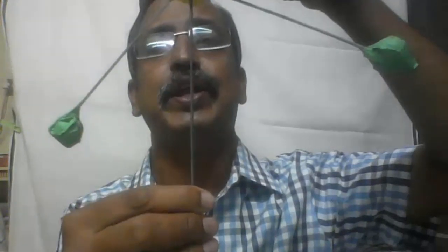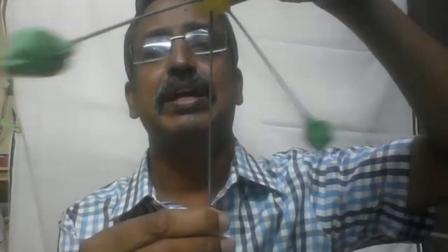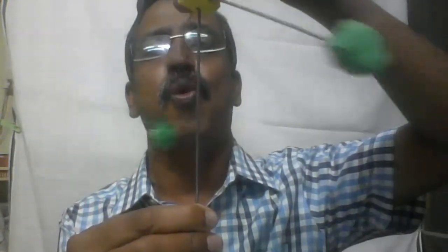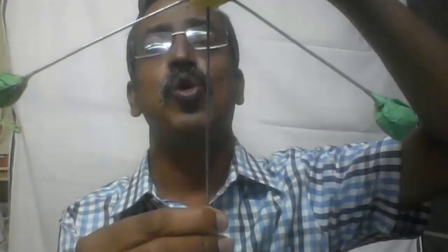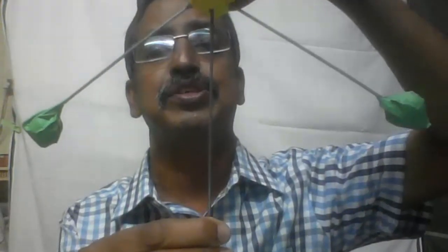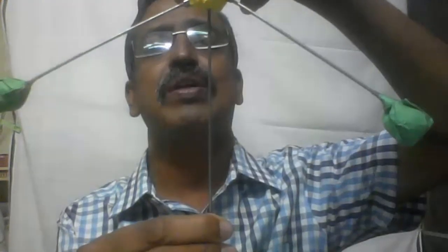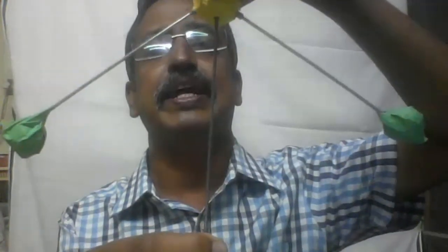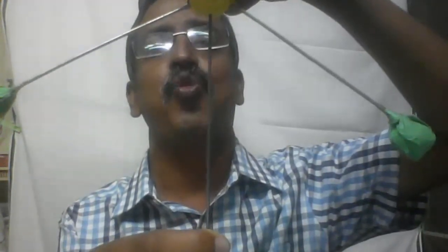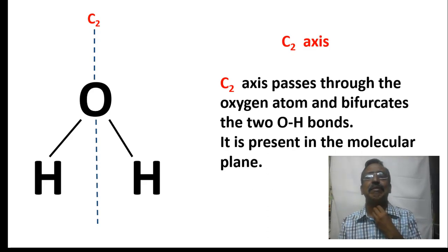If I rotate the molecule about the C2 axis through an angle of 90 degrees we get an appearance like this. If I rotate it through another 90 degrees — a total of 180 degrees — we get an equivalent appearance. In other words, we rotated the molecule through 180 degrees and get an equivalent appearance when the two hydrogen atoms interchange. If I rotate it through another 180 degrees, totaling 360 degrees, we get back the original molecule. During a full rotation of 360 degrees we get the same appearance twice, and hence this axis is known as the C2 axis.